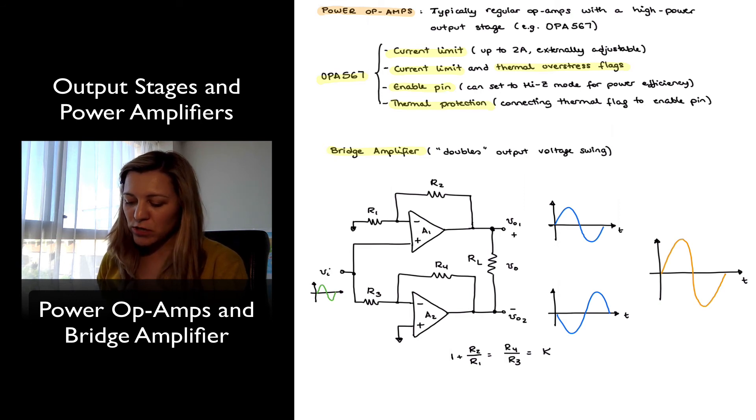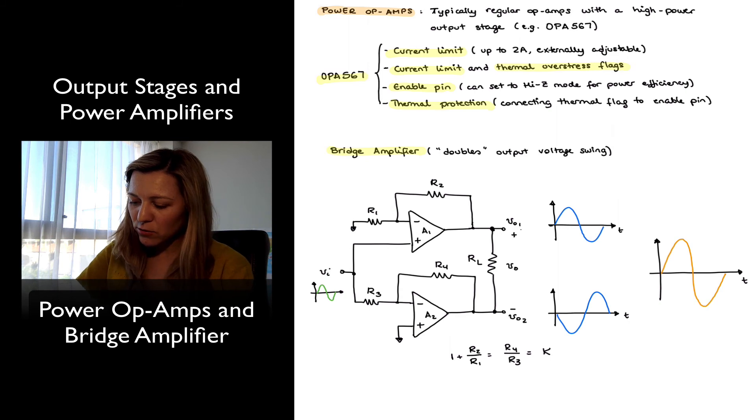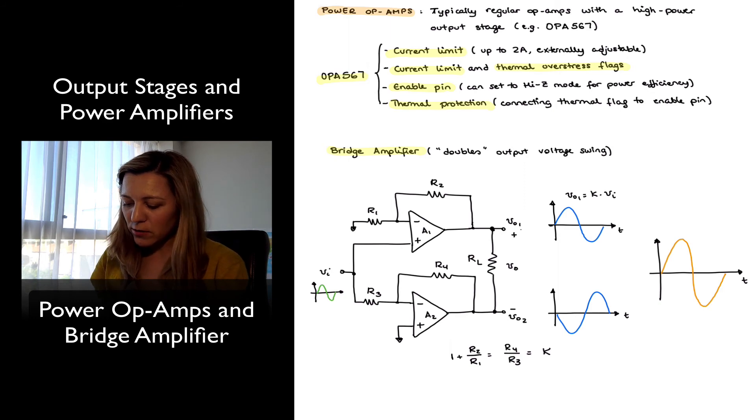And so we expect that the output signals, Vout1 and Vout2, of the individual amplifiers, if we apply a sinusoidal input signal, we expect that Vout1 will be equal to K times the input signal, and Vout2 is going to be equal to negative K times the input signal.